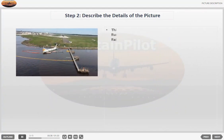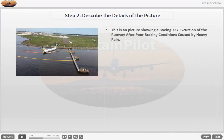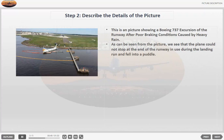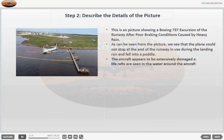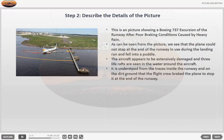This is a picture showing a Boeing 737 excursion of the runway after poor braking conditions caused by heavy rain. As can be seen from the picture, we see that the plane could not stop at the end of the runway in use during the landing run and fell into a puddle. The aircraft appears to be extensively damaged and three life rafts are seen in the water around the aircraft. It is understood from the traces inside the runway and on the dirt ground that the flight crew braked the plane to stop it at the end of the runway.